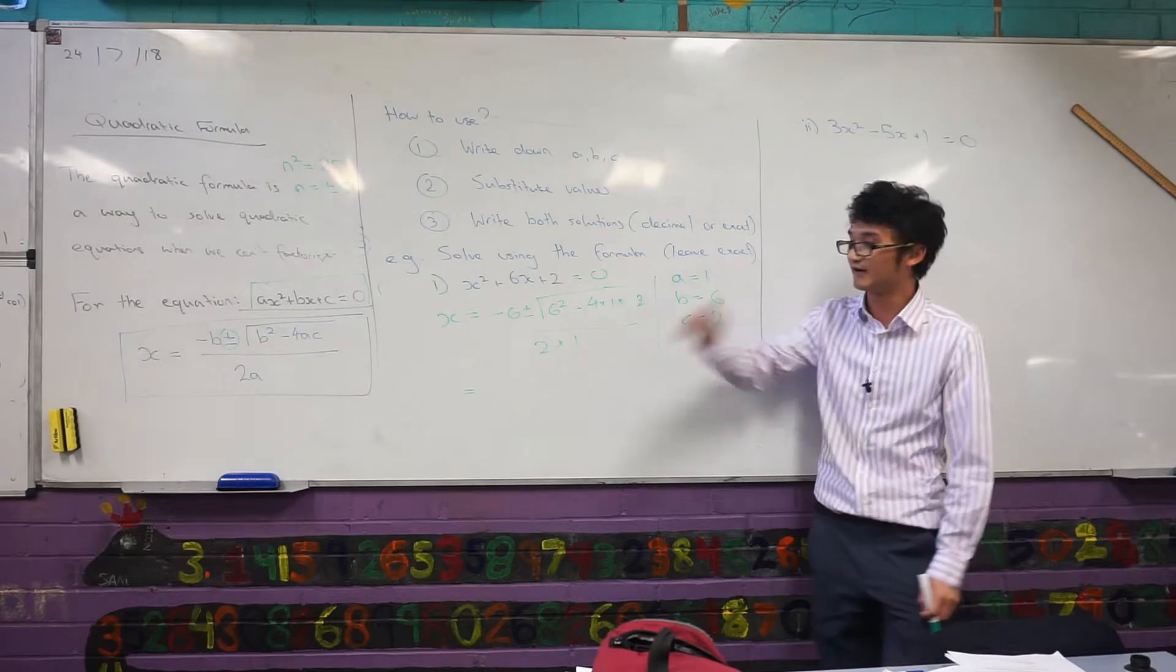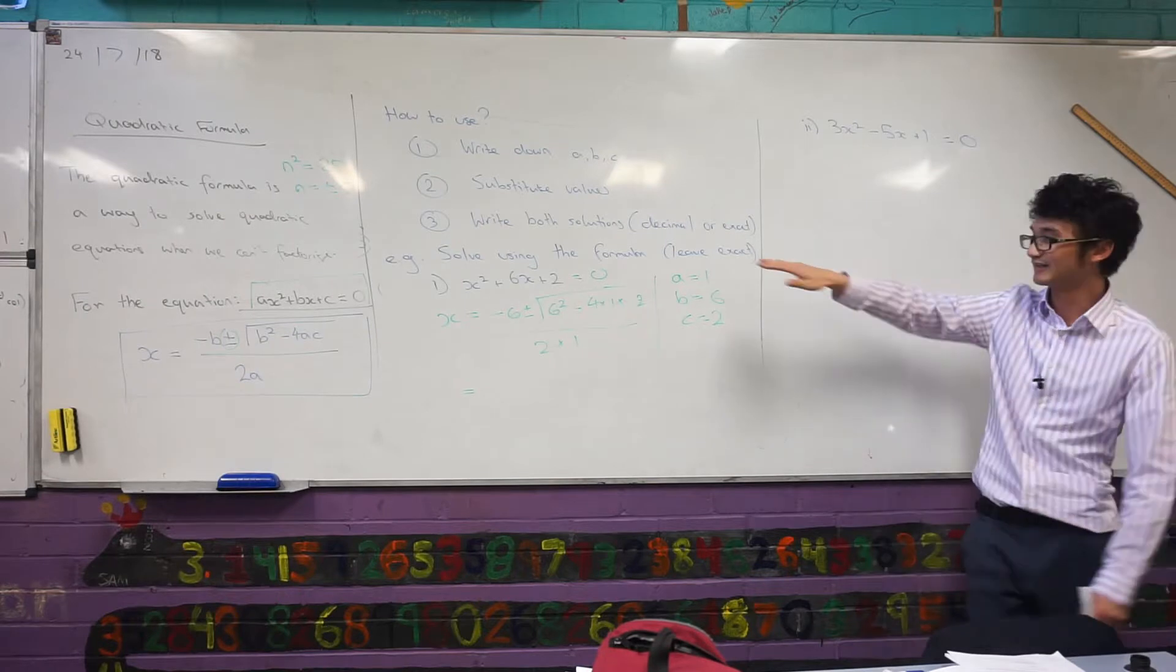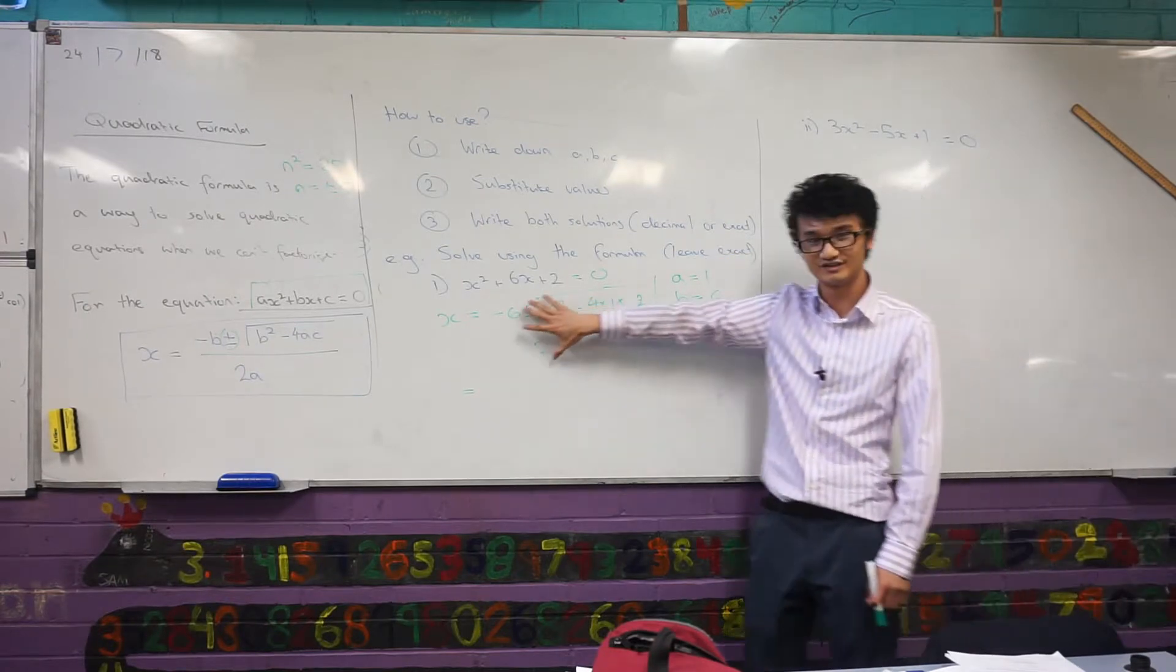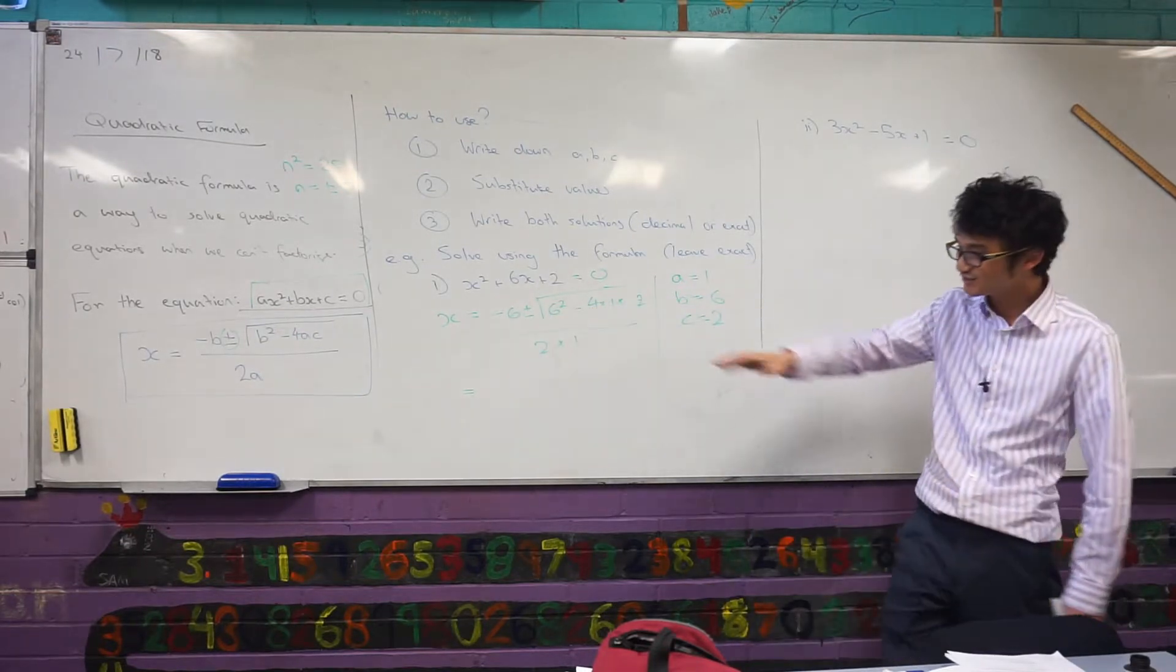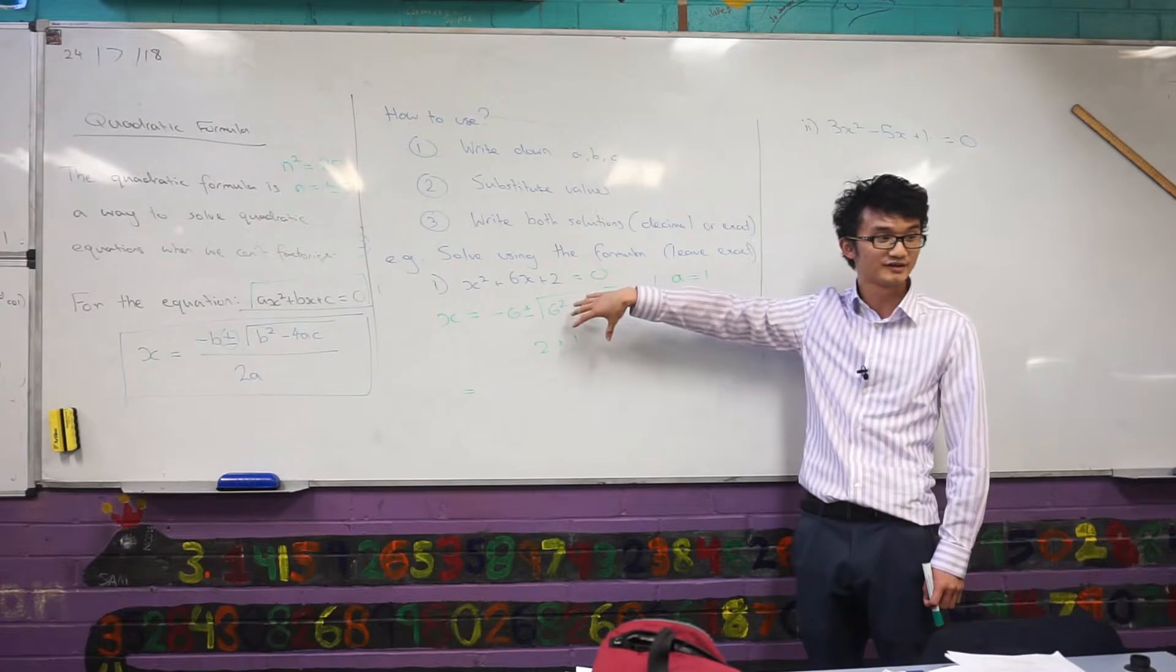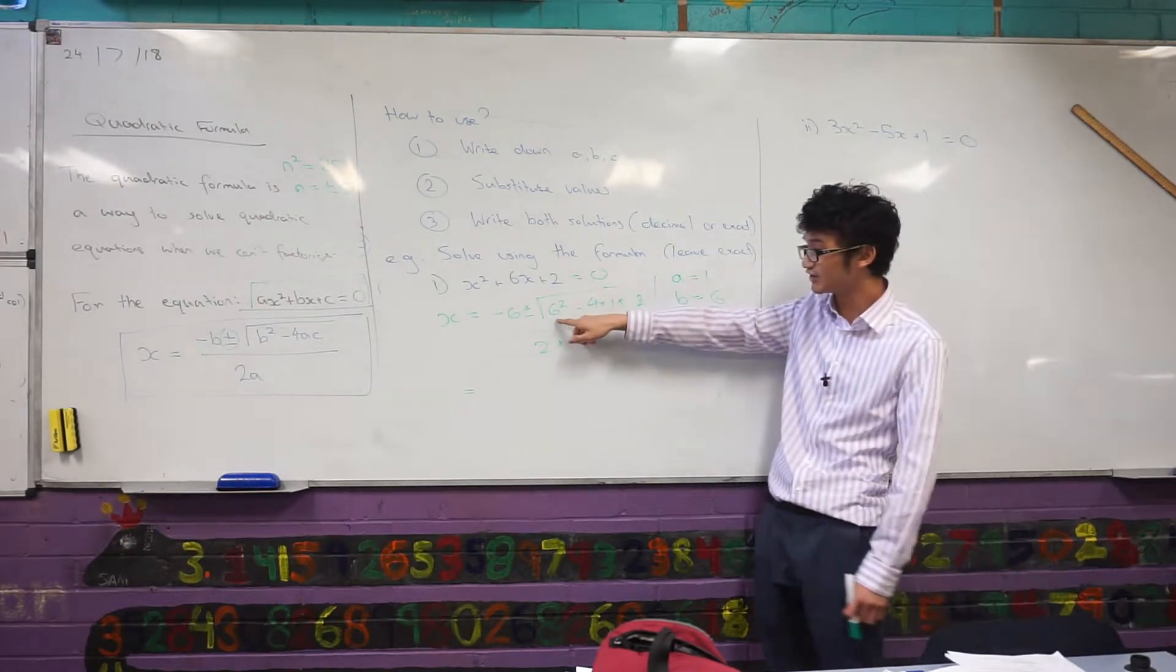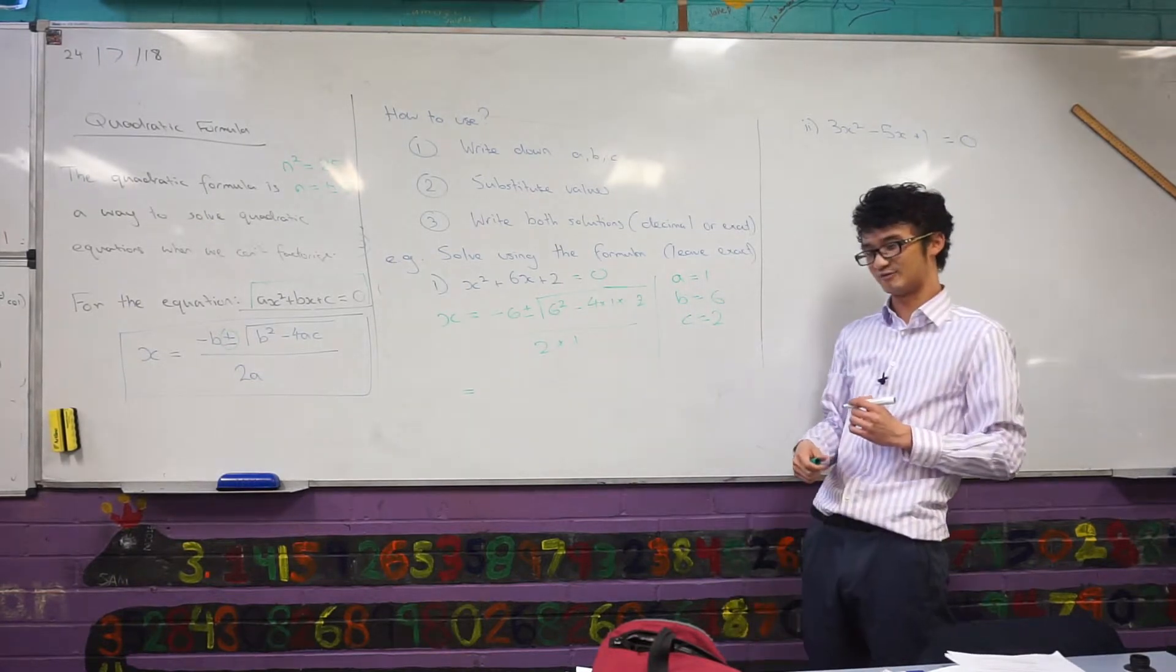What I'm going to do here now is, for this question, you can see they said solve using the formula but leave as exact. What that means is you could put all this into a calculator, it could probably be very messy, but they just want you to leave it as it is like that. They want you to leave it as it is. But what I would do is I would just simplify this. Remember, this is all under a square root here, so I would just simplify that out a bit more.